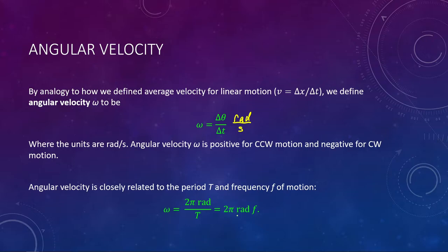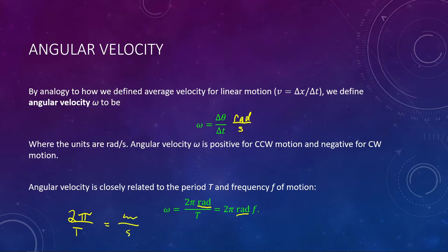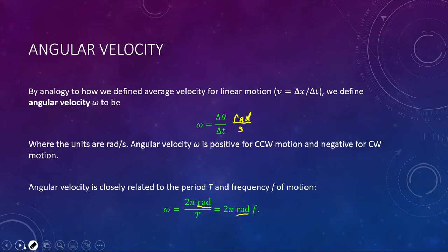One thing to note: I included the unit 'rad' written into the equation just so you remember it's there. It's not a number or variable — I'm inserting the unit so you don't forget it. Because if you just wrote 2π over time, the units look like just one over seconds, not radians per second. Be very careful: rad stands for radians in the equation. So the equation is omega equals 2π over T, or 2πf.